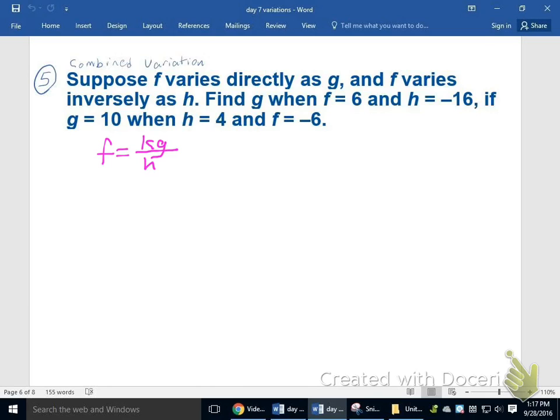Find g when f equals 6 and h equals negative 16. Can't do that yet. What I'm going to do is focus on this last part to find the constant of variation first. That if g equals 10, k times 10, when h equals 4, putting in a 4 for h, and f equals negative 6.